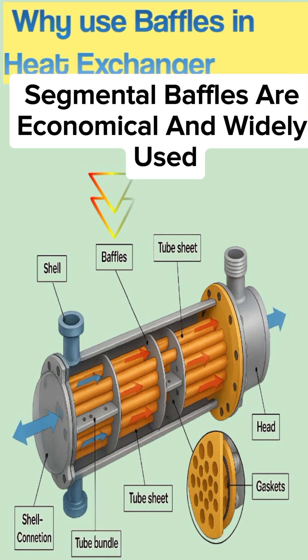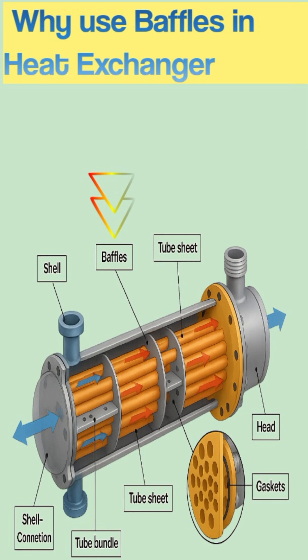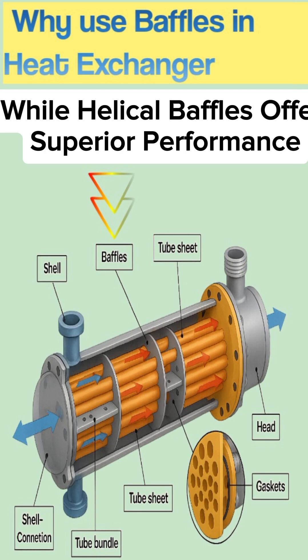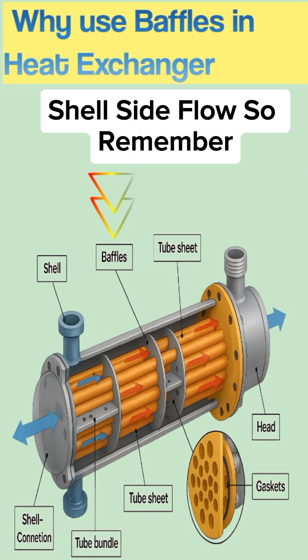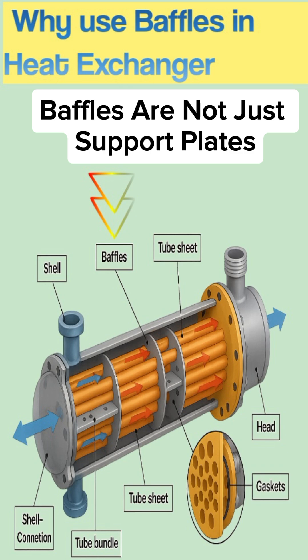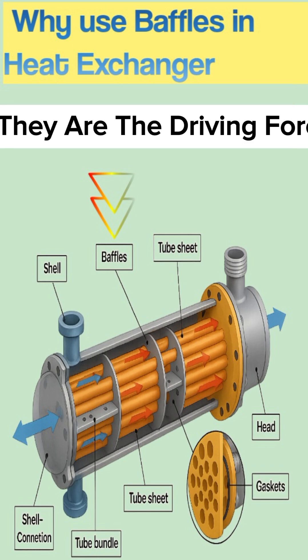Segmental baffles are economical and widely used, while helical baffles offer superior performance with lower pressure drop. Longitudinal baffles are used to create two or four pass shell side flow. So remember, baffles are not just support plates — they are the driving force behind efficient heat transfer.